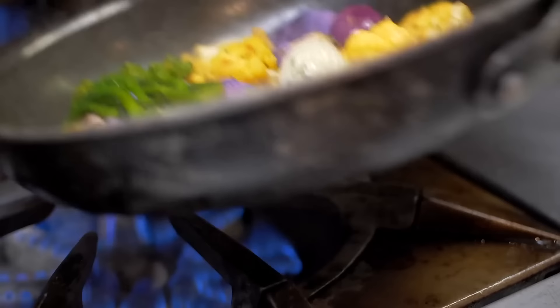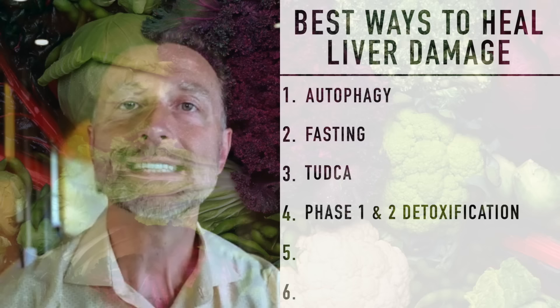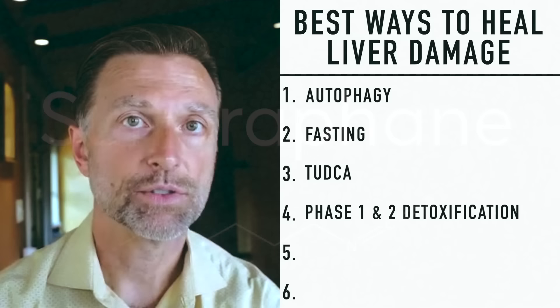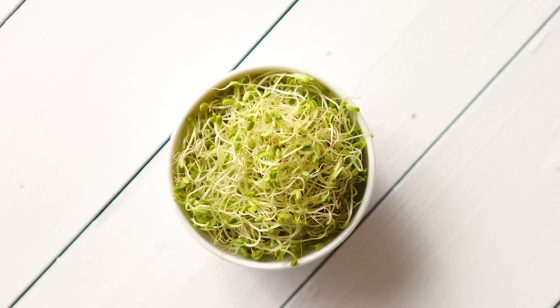Sulfur-rich vegetables, like cruciferous - broccoli, brussel sprouts, cabbage, arugula, radish, things like that. Green tea is another trigger for phase one, phase two detoxification. And straight sulforaphane, which is the vital nutrient in broccoli sprouts. So if you add broccoli sprouts to your salad, you can greatly help your liver.